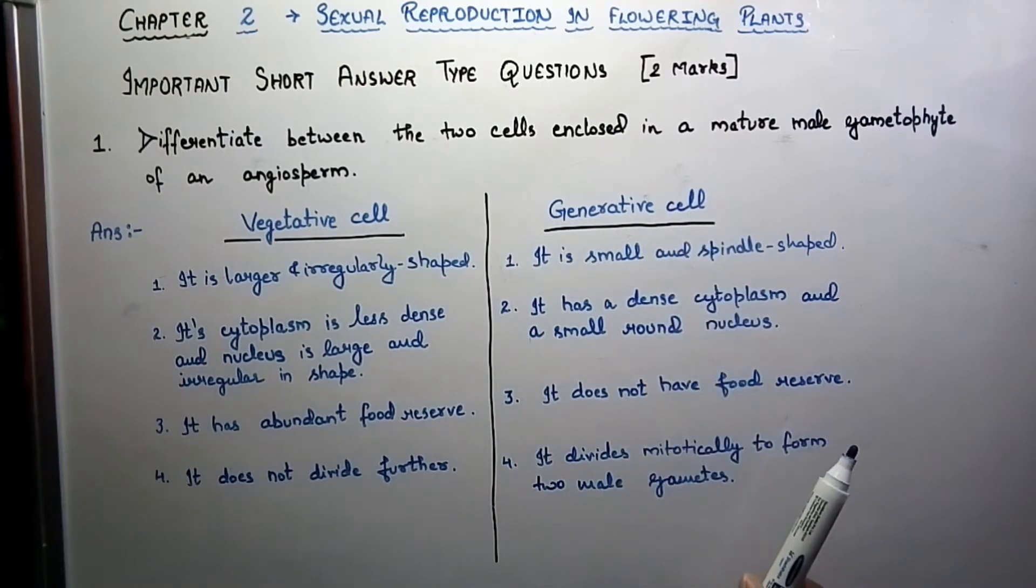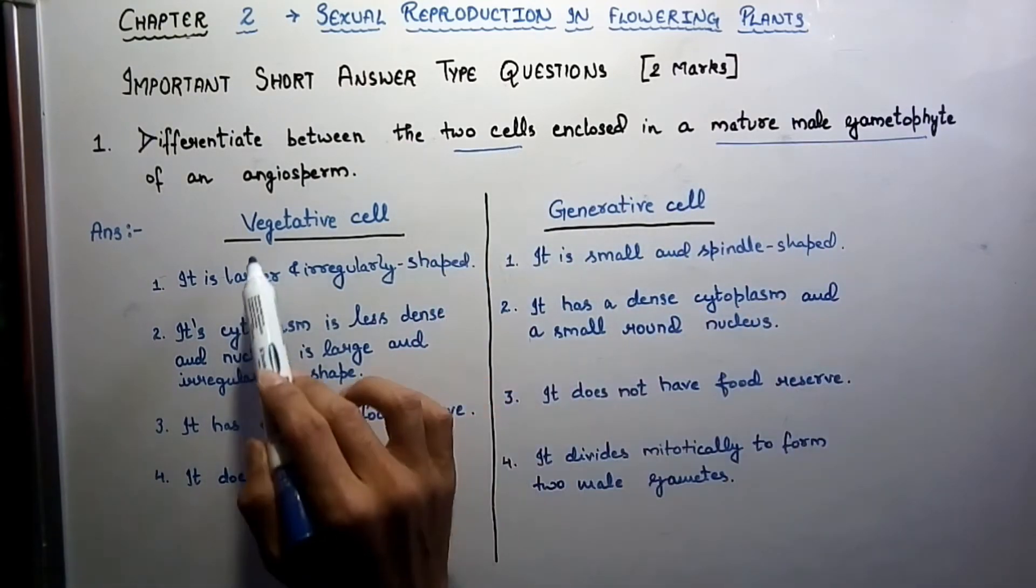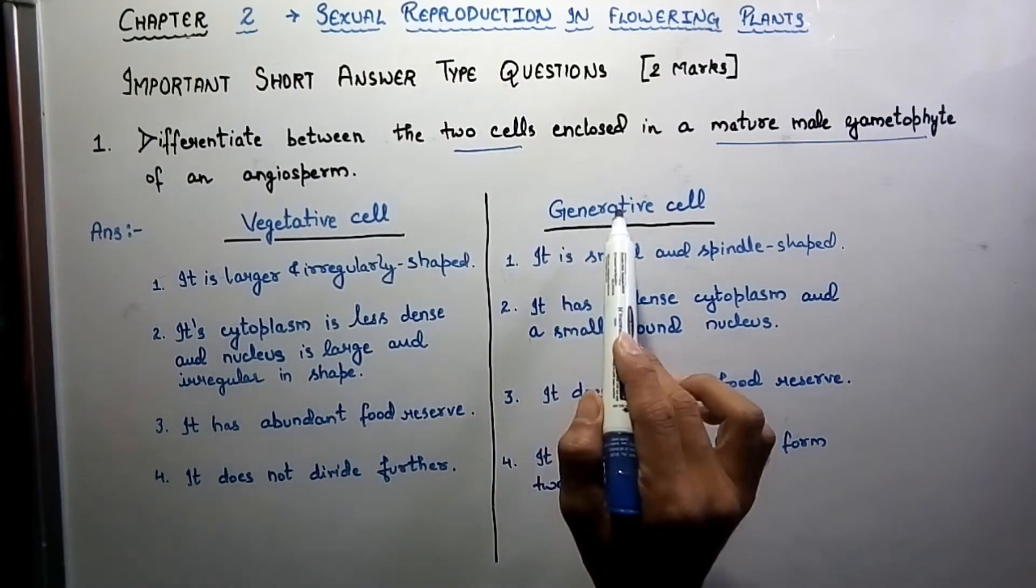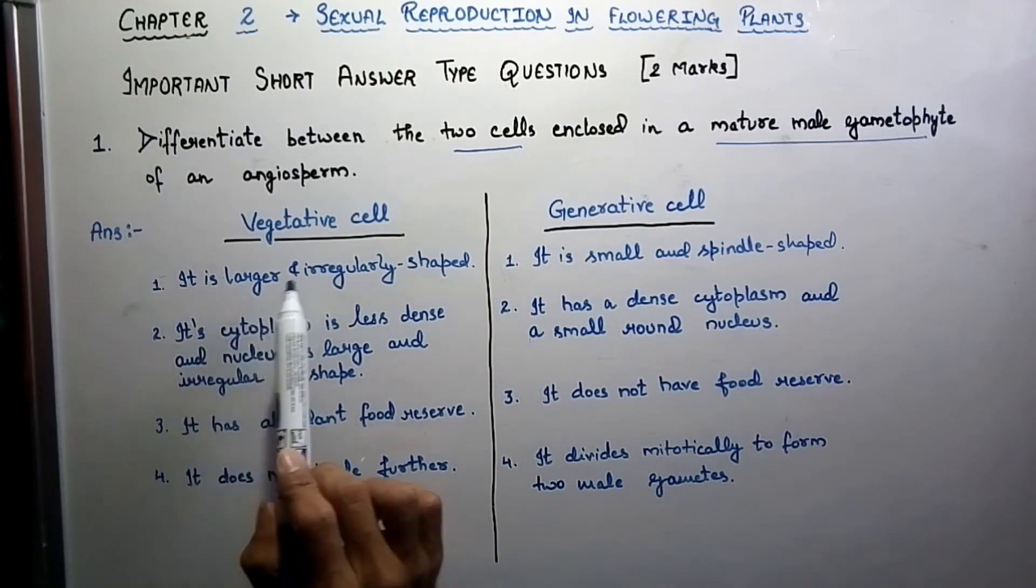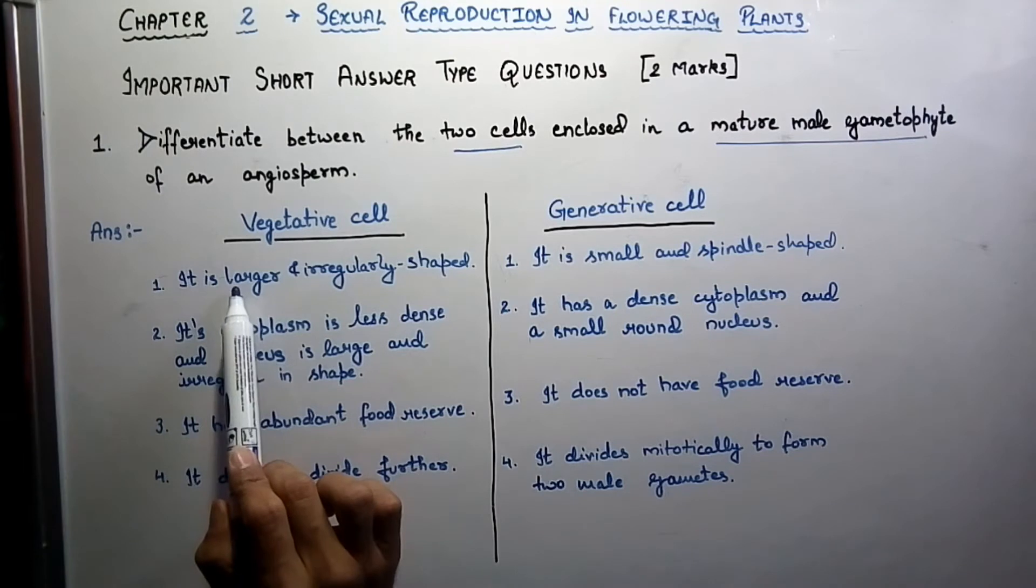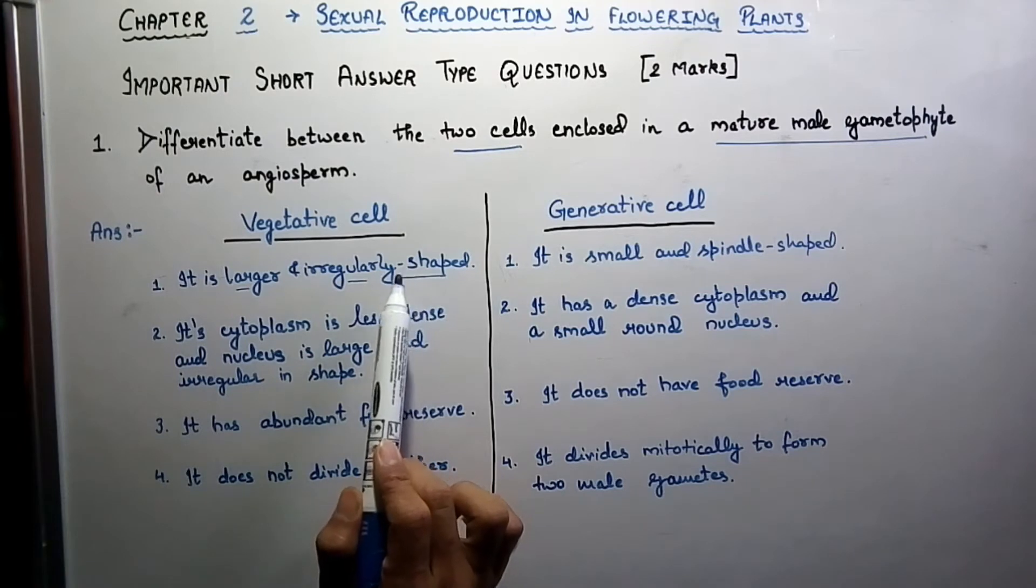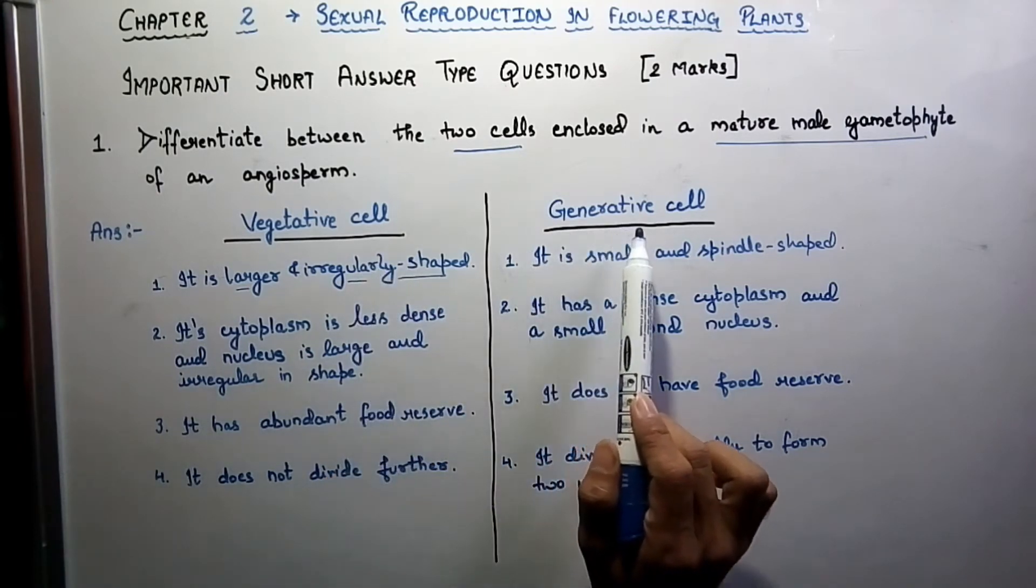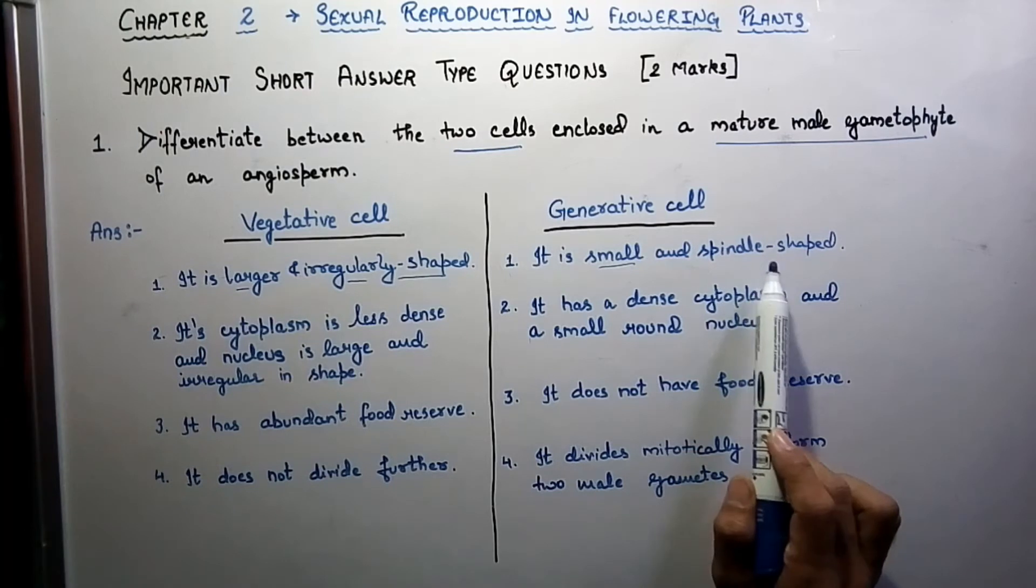Whenever a question asks for differentiation, we make a tabular form and differentiate in this manner. The two cells of a mature male gametophyte are the vegetative cell and the generative cell. First difference: the vegetative cell is larger and irregularly shaped, whereas the generative cell is small and spindle shaped.